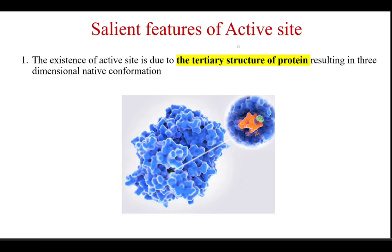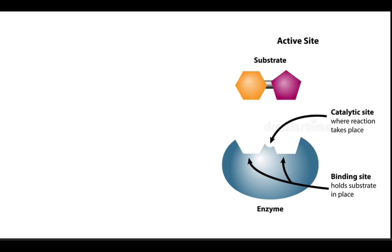The salient features of the active site: the existence of the active site is due to the tertiary structure of the protein, resulting in its three-dimensional native conformation. Basically, because of the three-dimensional structure of the protein, there is the presence of this active site.